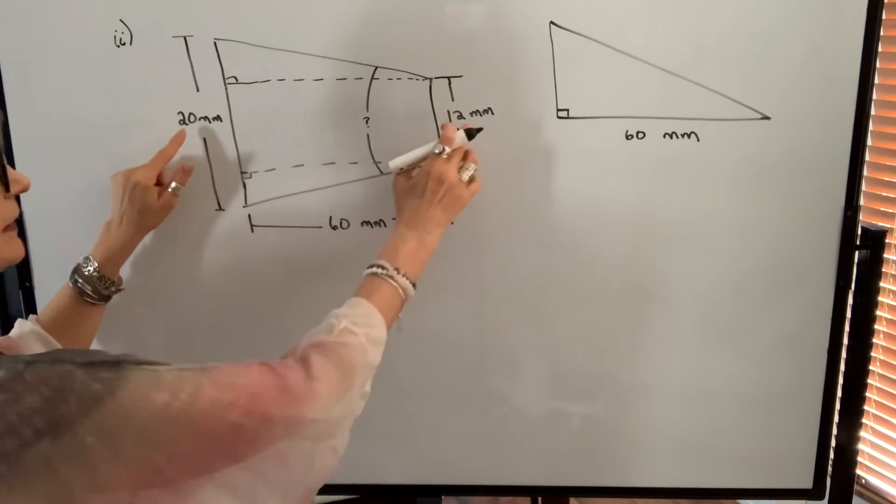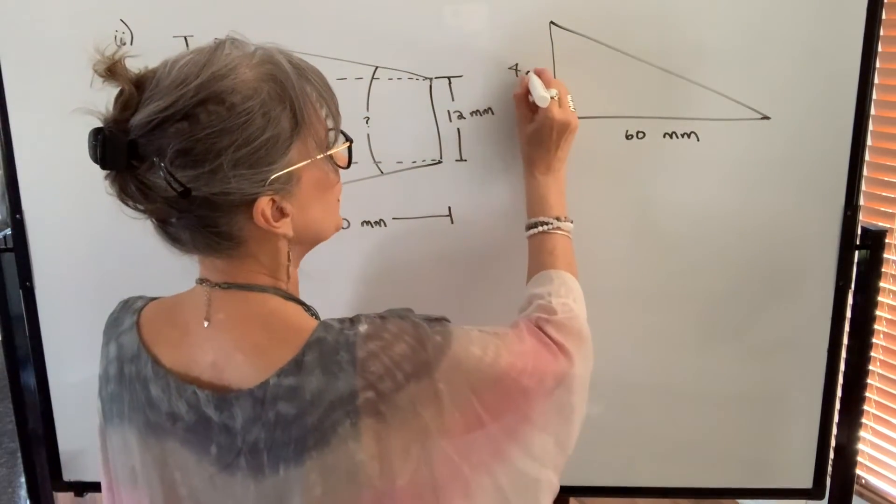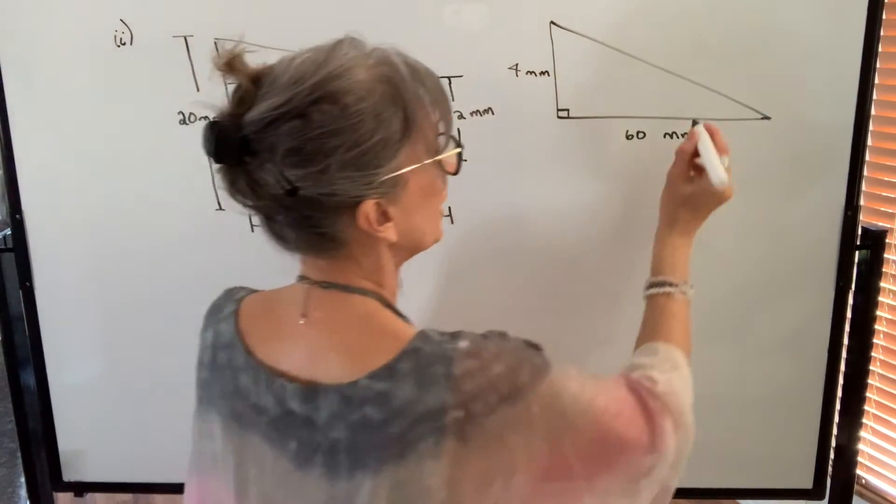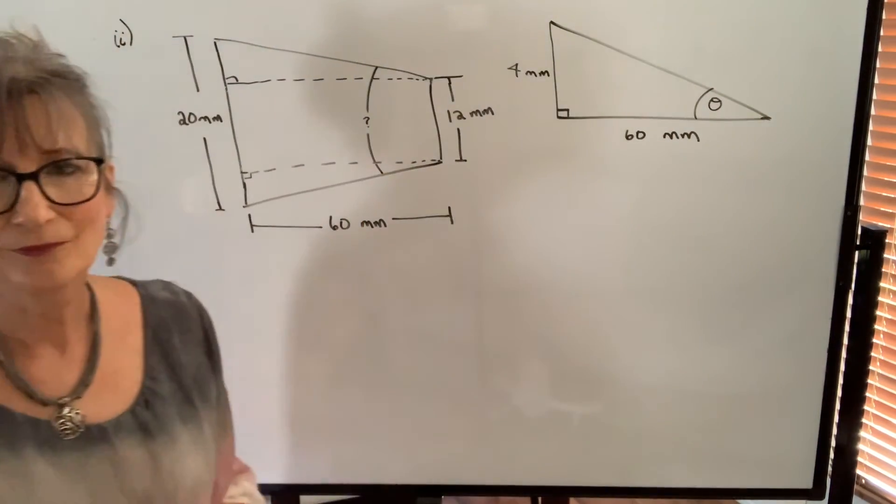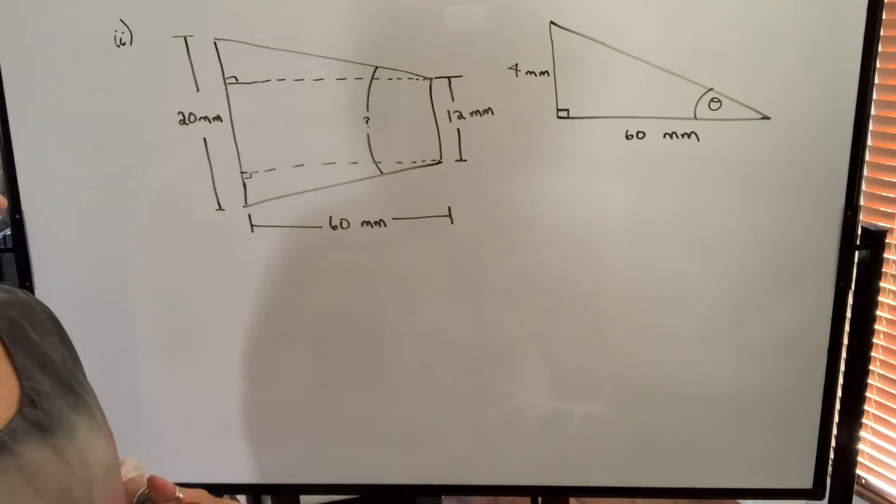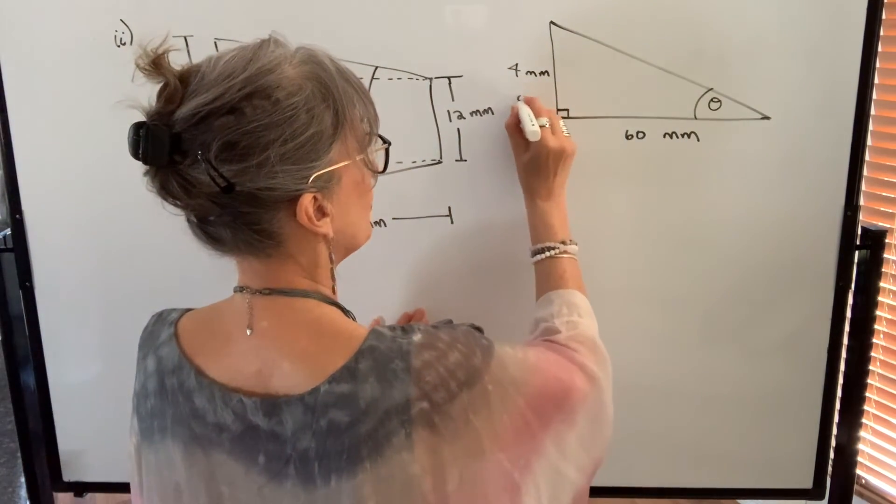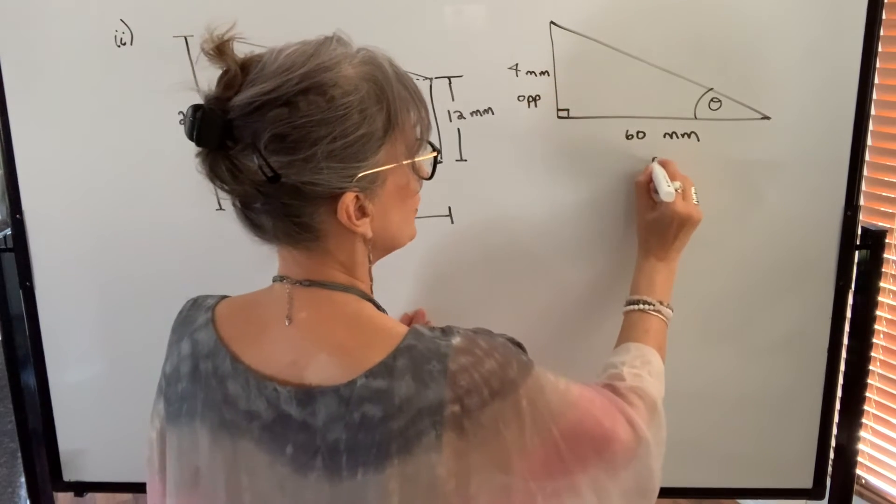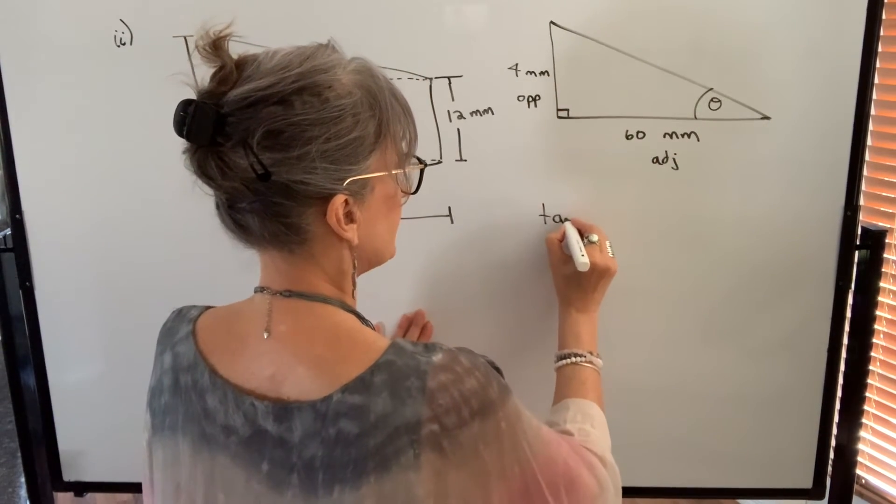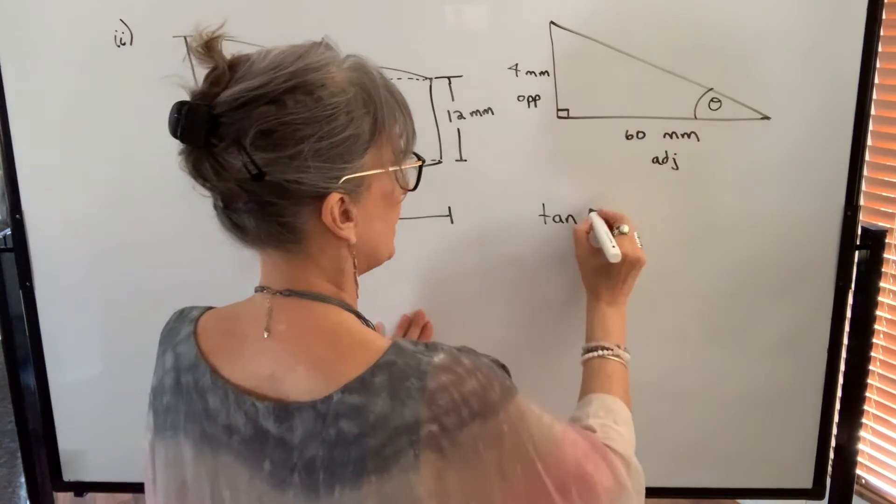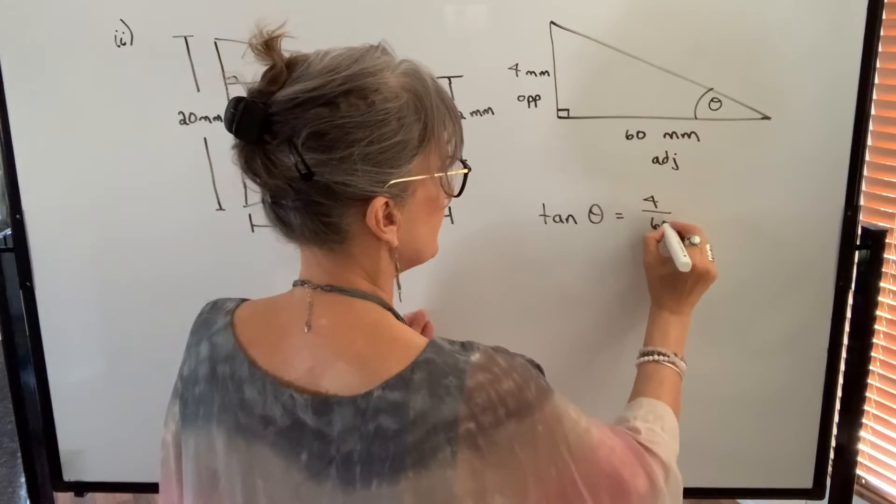You need to take the difference in the diameters and then divide by 2. So this is 4 millimeters here. And what I don't know is this angle which I'm going to call theta. Again I'm going to label my sides in relation to that angle. This is the opposite side. This is the adjacent side. And the trig function that I'm going to use is the tangent function. So the tangent of this angle theta will equal opposite which is 4 over adjacent which is 60.